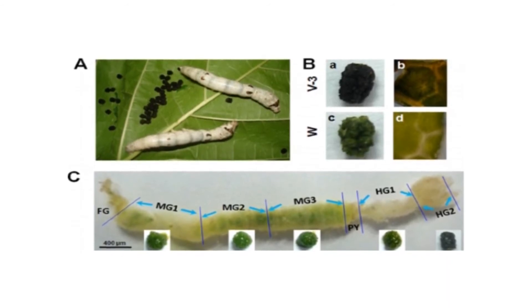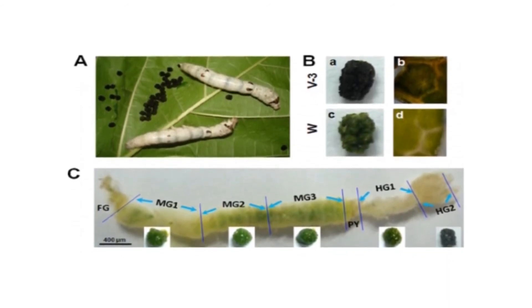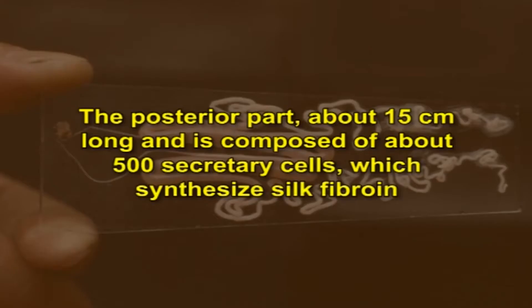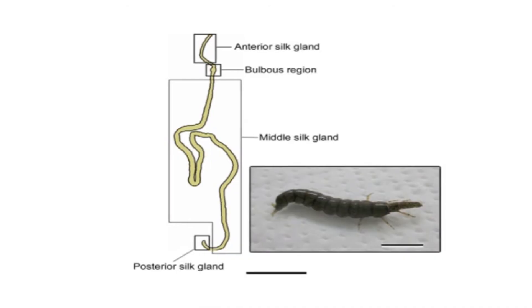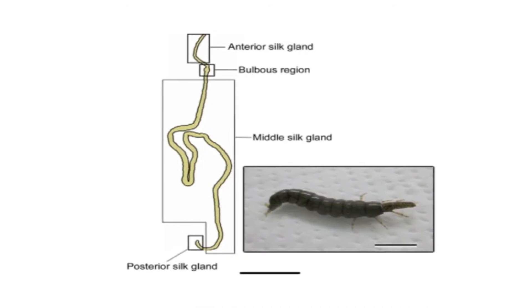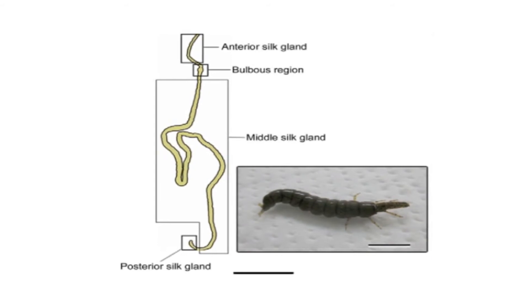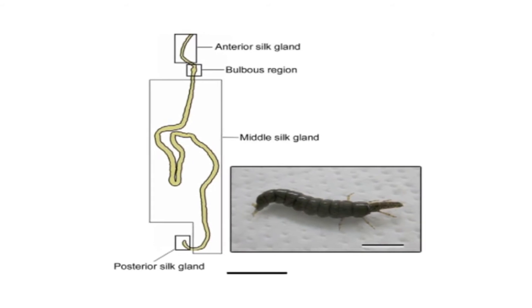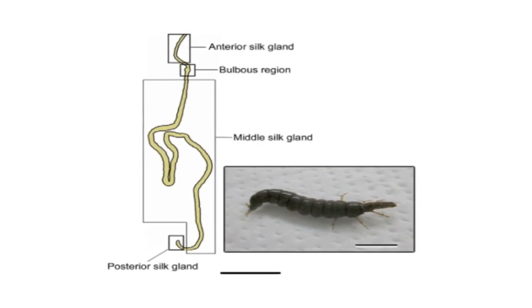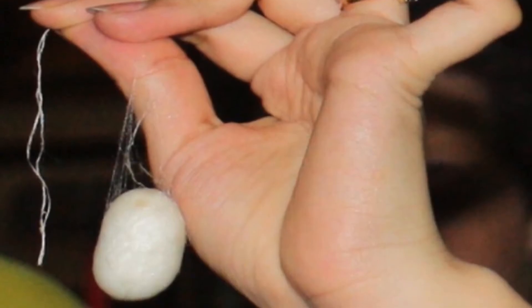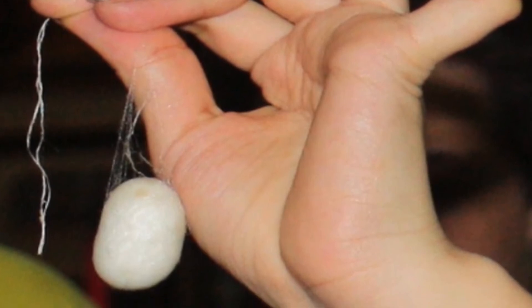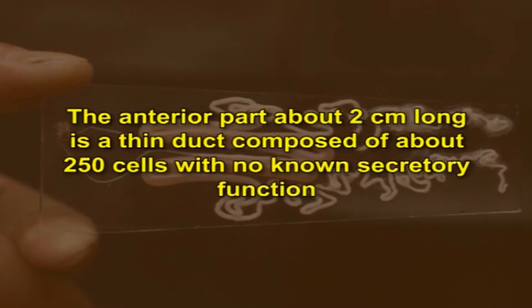According to its morphology and function, the silk gland can be divided into three distinct regions. The posterior part, about 15 centimeters long, is composed of about 500 secretory cells which synthesize silk fibroin. The middle silk gland, in the lumen of which silk proteins are stored until spinning, is about 7 centimeters long and contains about 300 secretory cells producing silk sericin — the protein which cements the fibroin thread of the cocoon. The anterior part, about 2 centimeters long, is a thin duct composed of about 250 cells with no known secretory function.